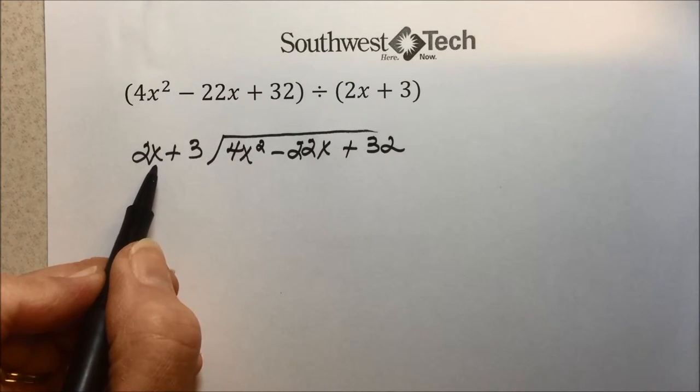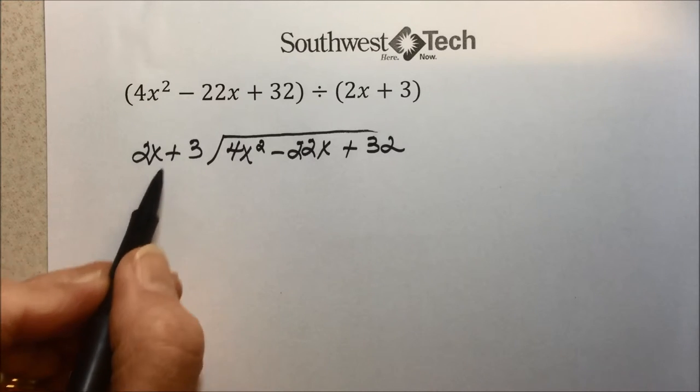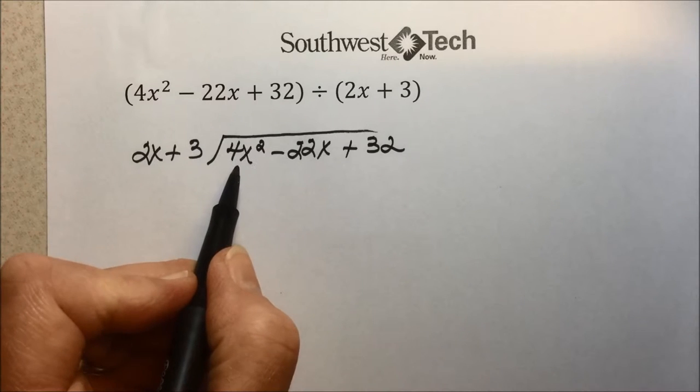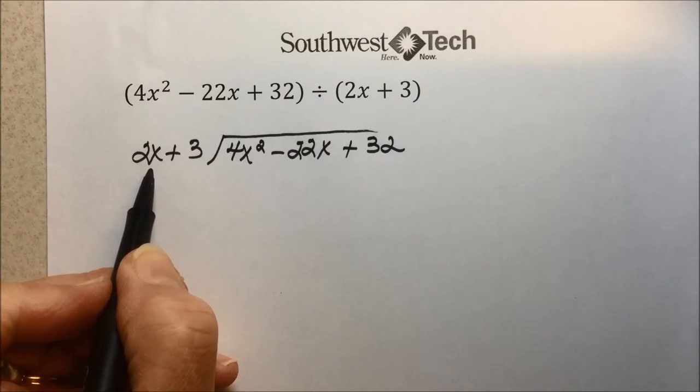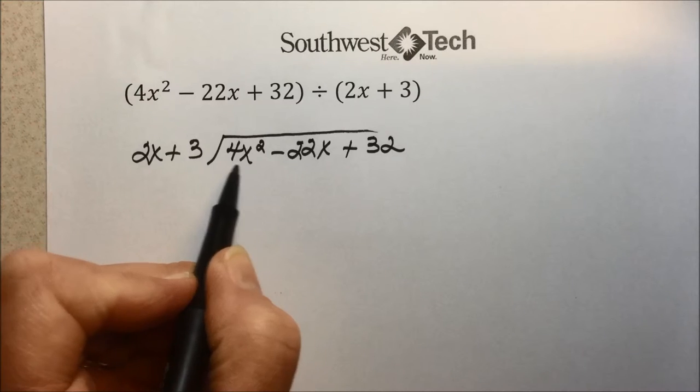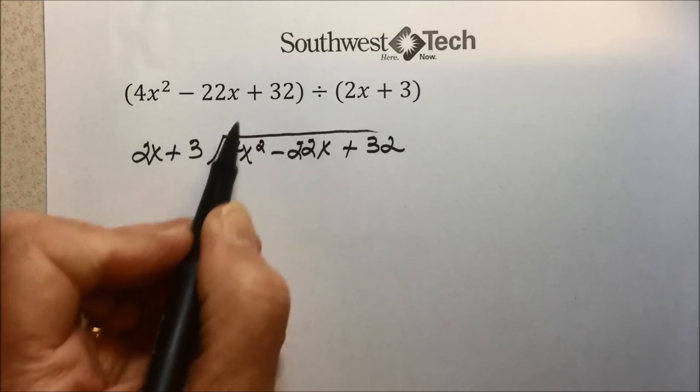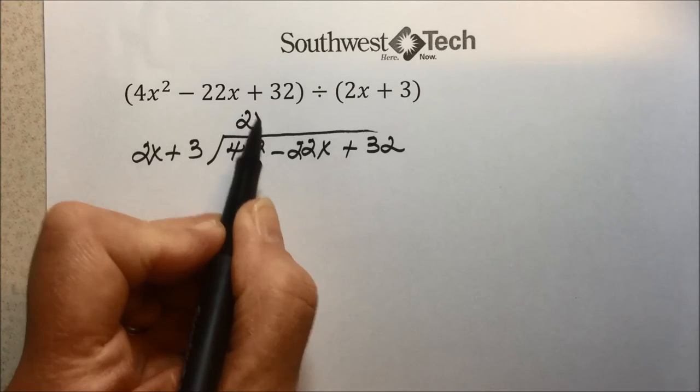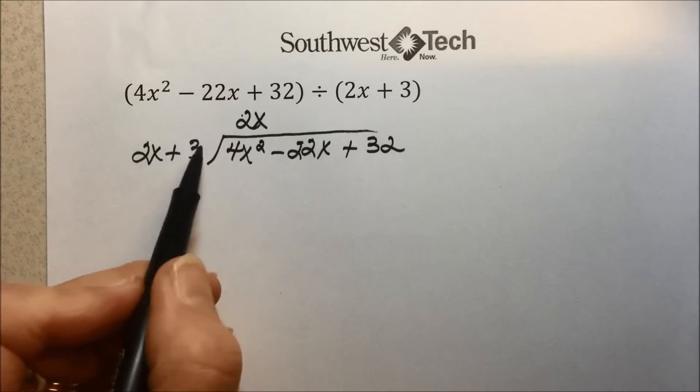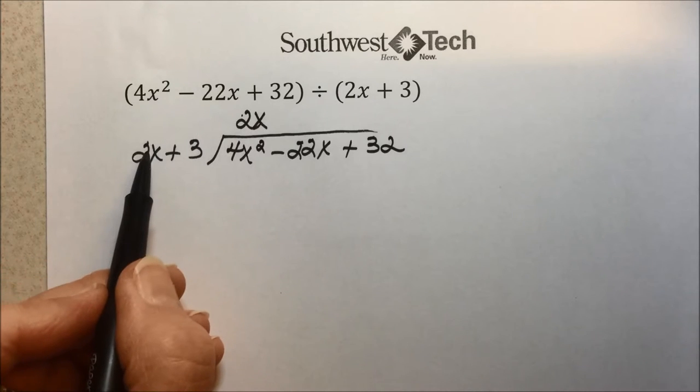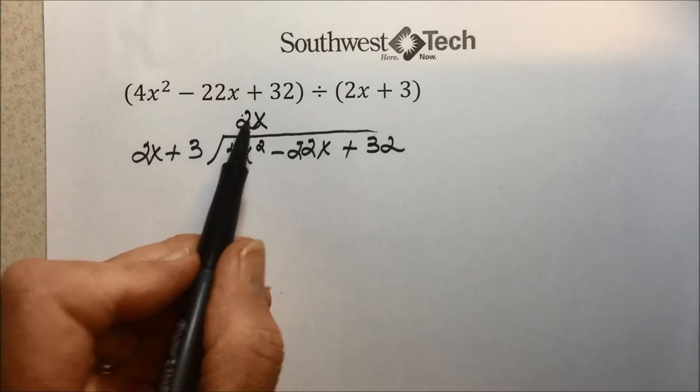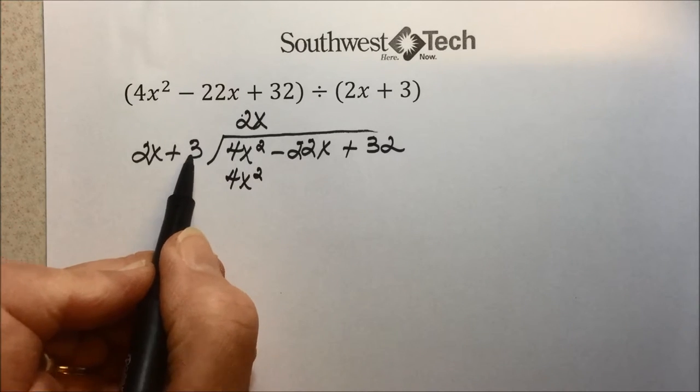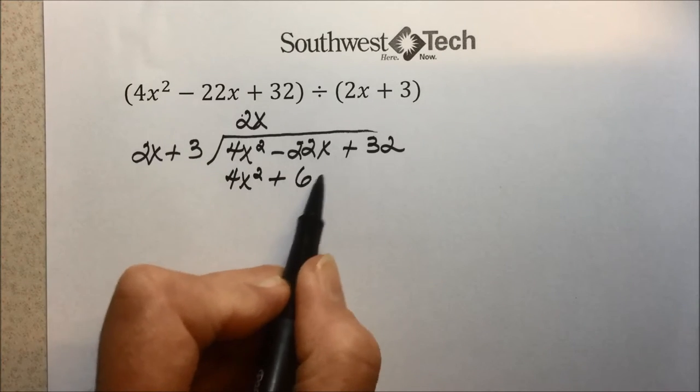And no different than the last problem, just because there's a 2 here has no bearing on it. We take our highest power in our divisor and ask the question, what do we need to multiply 2x by to give us 4x squared? We would need a 2 to bring it up to a 4, and we need another x to bring this up to an x squared. And now we'll use essentially distributive property. 2x times 2x is 4x squared. 2x times the 3 gives us a 6x.